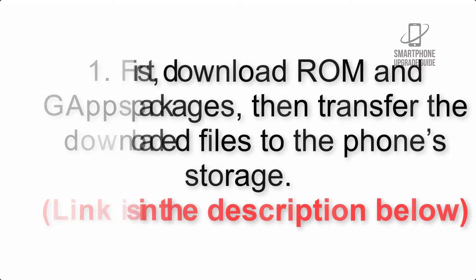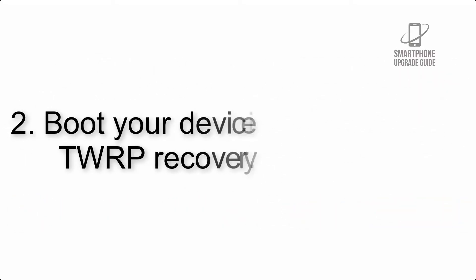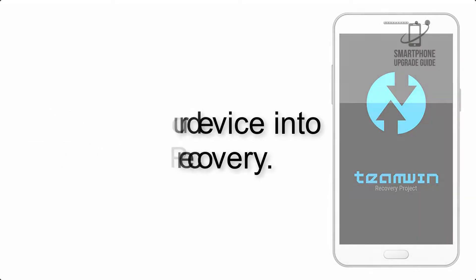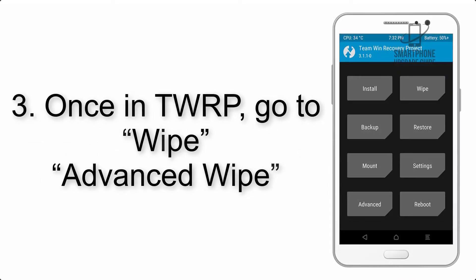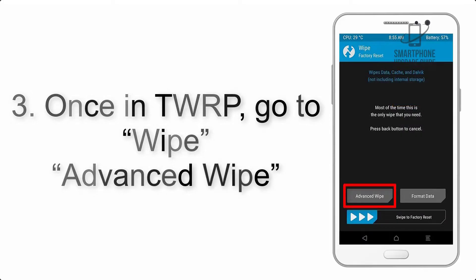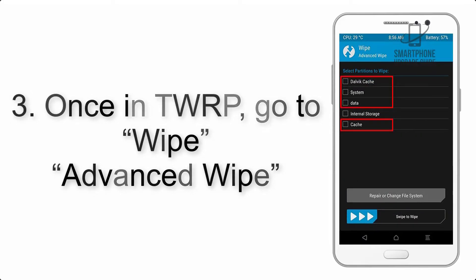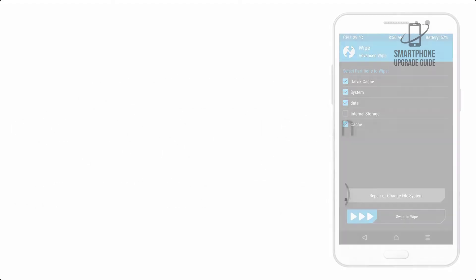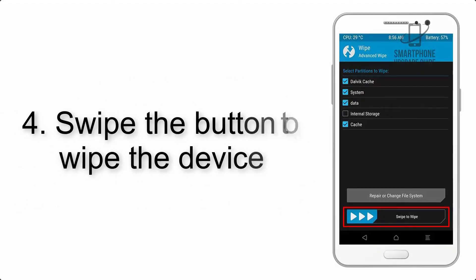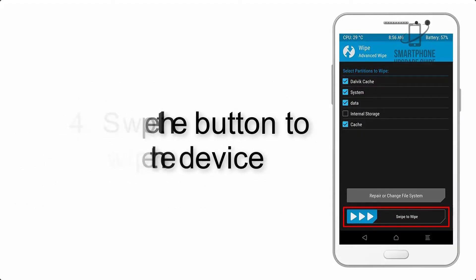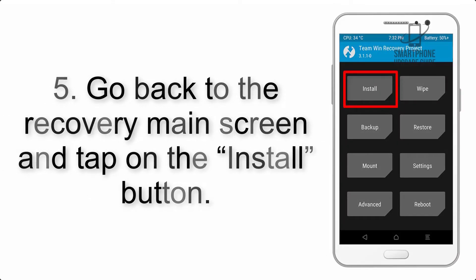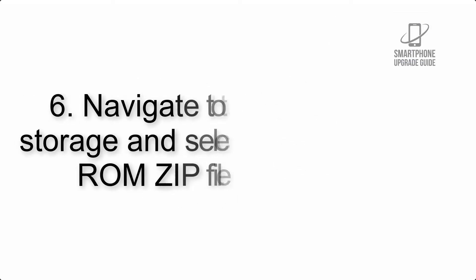The link is in the description below. Step 2: boot your device into TWRP recovery. Once in TWRP, click on Wipe, then Advanced Wipe, and select the checkboxes as shown in the image, excluding internal storage. Step 4: swipe the button to wipe the device.